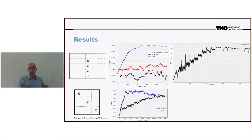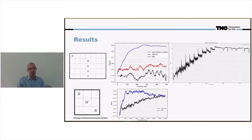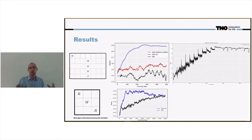We also ran the same approach for the multi-agent environment — two agents, two rewards, with a wall in the middle — and we have to find the optimal policy. This grid is much more complex than the single-agent environment, because there are dependencies between the agents that also have to be learned.